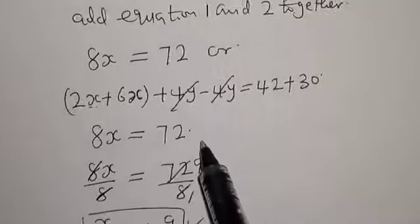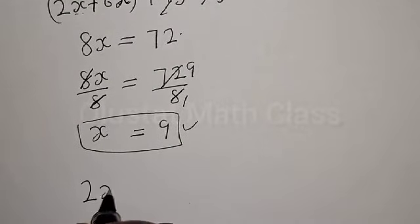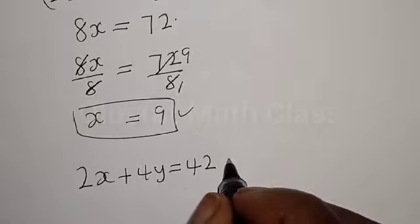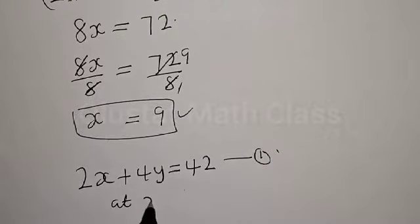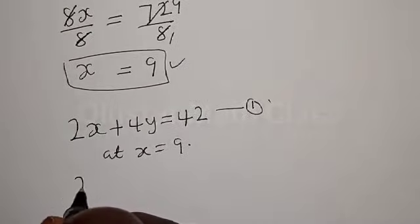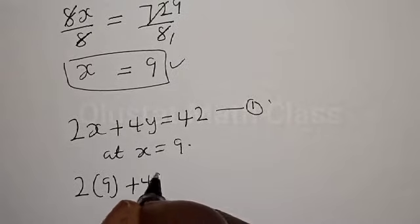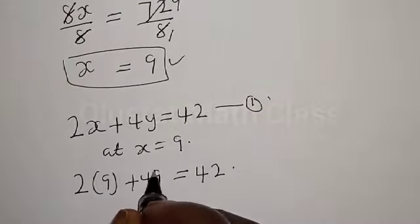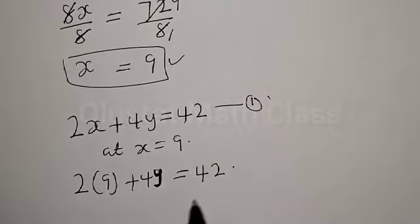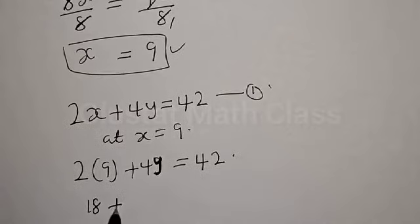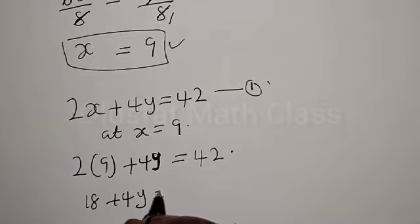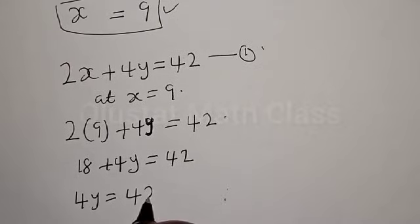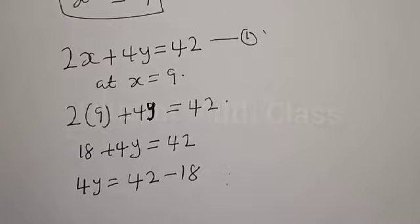We've gotten the value of x to be equal to 9. Now let's substitute into equation 1. Equation 1 is 2x plus 4y is equal to 42. At x equal to 9, we have 2 times 9 plus 4y is equal to 42. That is 18 plus 4y is equal to 42.